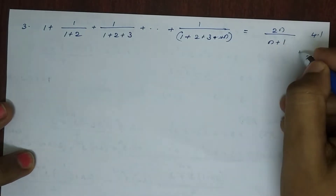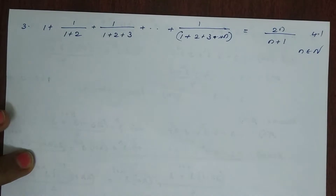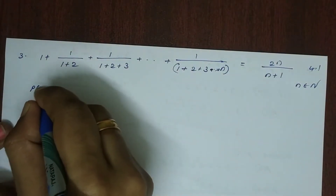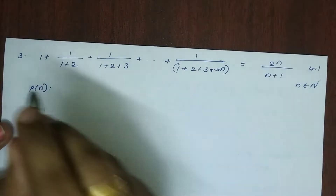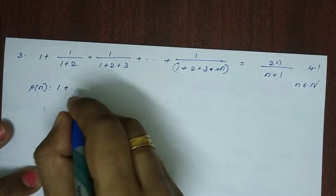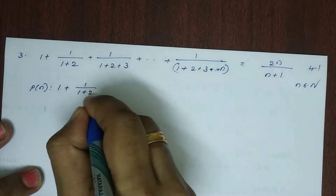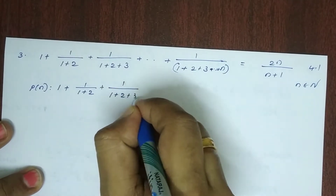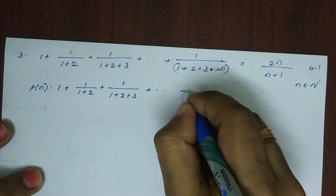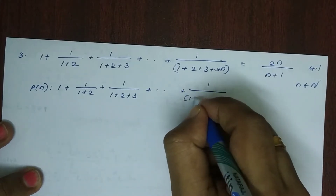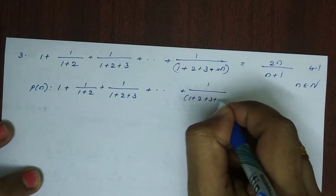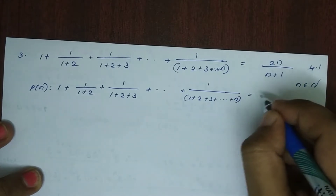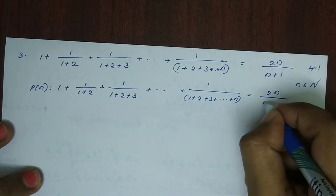For all n belonging to the natural numbers. Our first step is to let P(n) be our statement. That is, P(n): 1 plus 1/(1+2) plus 1/(1+2+3) plus etc. plus 1/(1+2+3+...+n) is equal to 2n divided by (n+1).